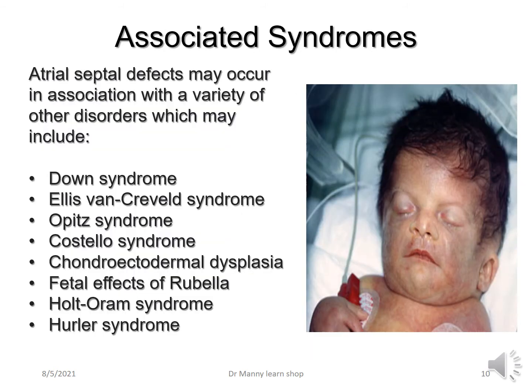Associated syndromes with ASDs may occur in association with a variety of disorders, including but not limited to: Down syndrome, Ellis-van Creveld syndrome, Optus syndrome, Costello syndrome, Chondroectodermal Dysplasia, fetal effects of rubella, Holt-Oram syndrome, and Hurler syndrome.